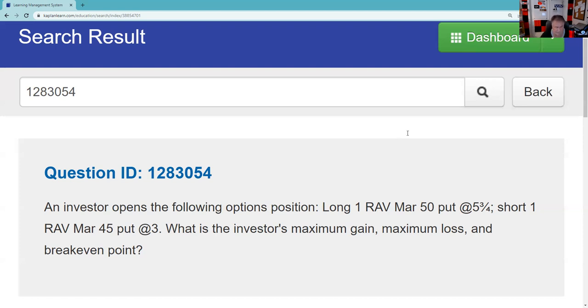Question 1283054. An investor opens the following option positions. You go long one RAV, March 50 put at five and three quarters, and you go short one March 45 put at three. What is the investor's maximum gain, maximum loss, and breakeven?